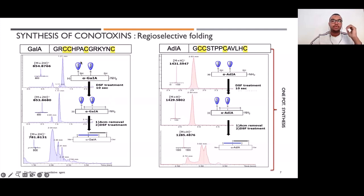So to do this, we synthesize our linear precursor with ACM protecting groups on cysteines 1 and 3. After DSF treatment—DSF is an oxidative agent which can promote disulfide bonds—we formed the first disulfide bond here. After removal of the ACM groups in positions 1 and 3, we add DSF to form the second disulfide bond and it gave us one single isomer here.